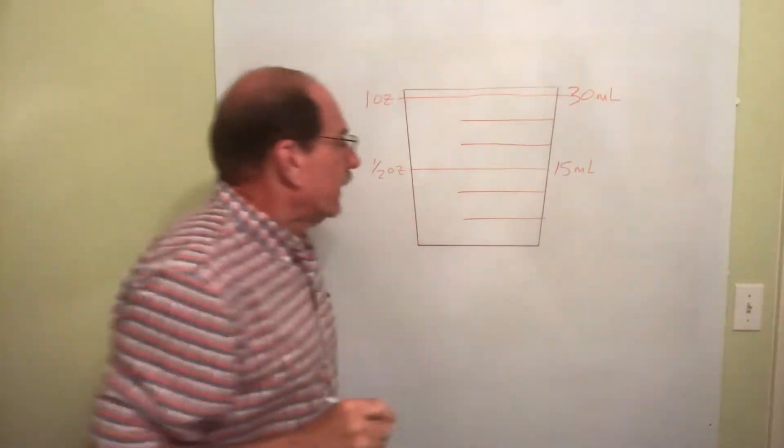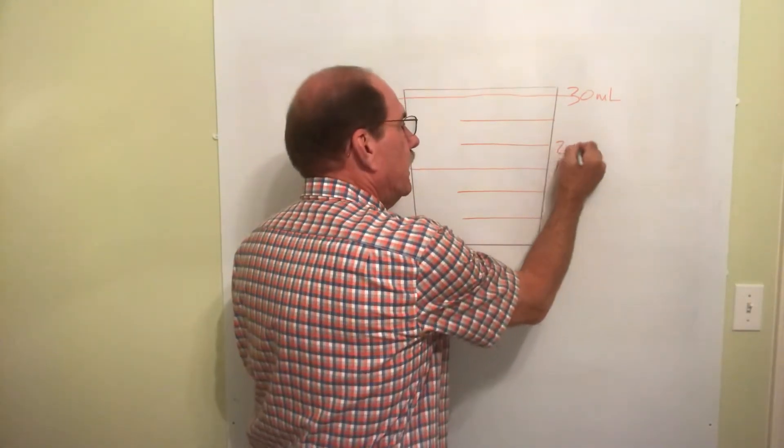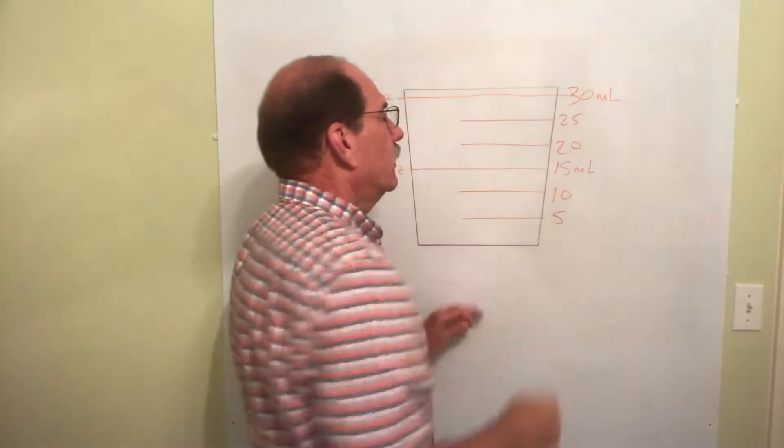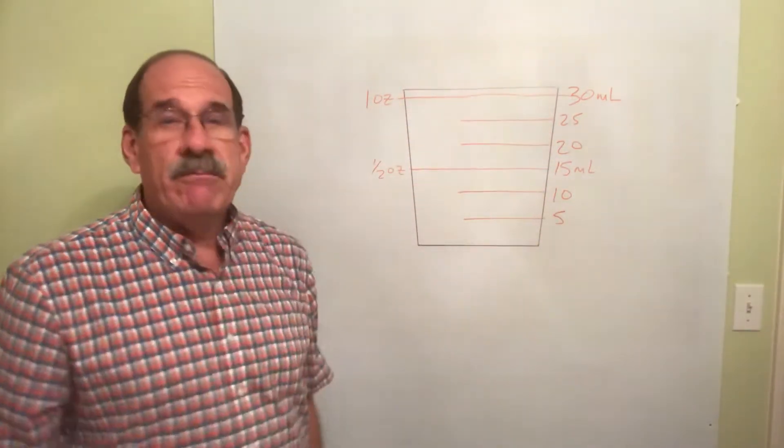Well, there we go. Well, that represents 5, 10, 15, 20, 25, and there's 30 milliliters. So, we're marking this off every 5 milliliter increments.